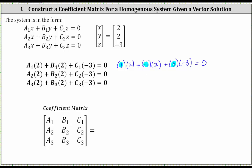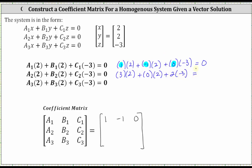Our only restriction was we cannot use zeros for all three coefficients, so the first row is one, negative one, zero. To find the rows in the coefficient matrix, we simply determine the values of a, b, and c that satisfy the equations. For row two, if we let a sub two equal three, that gives three times two equals six. If we let c sub two equal two, we get two times negative three equals negative six — the sum is zero — so we let b sub two equal zero. The second row in the coefficient matrix is three, zero, two.